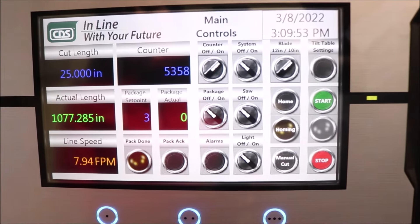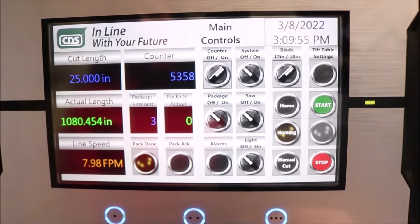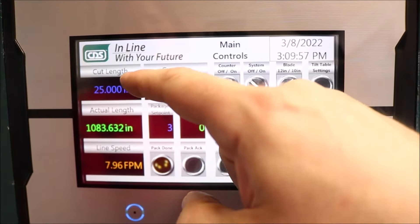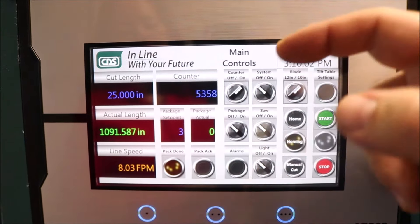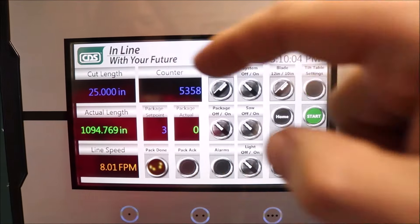The most common component on a servo is that you will have the ability to change your cut length. Right now we are at 25 inches a minute. In order to change it to 20 inches a minute, you will click on it.